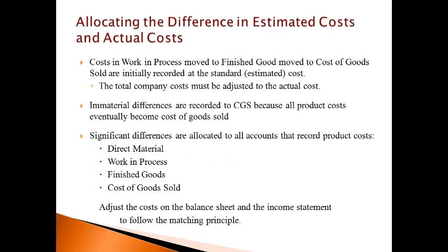Costs in work in process moved to finished goods and then to cost of goods sold are initially recorded at the standard or estimated cost. The total company cost must be adjusted to actual cost because the total amounts on the financial statements must be actual values. If the difference between estimated and actual cost is small and not material, the adjustment is made to the cost of goods sold account. All product costs eventually become cost of goods sold. However, if the amount is significant, the difference must be allocated to all the product cost accounts for inventory and cost of goods sold in order to follow the matching principle.